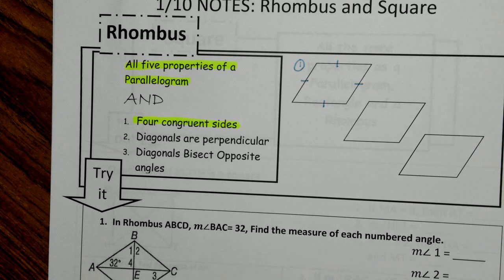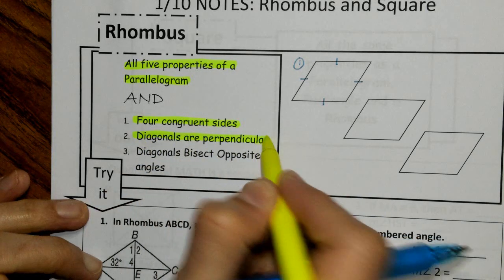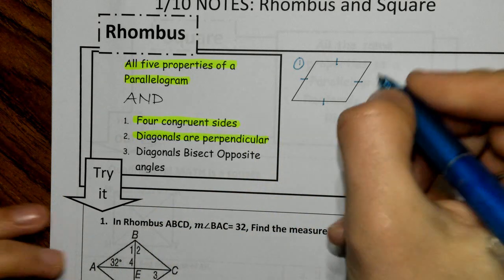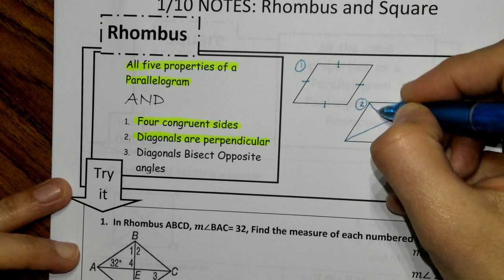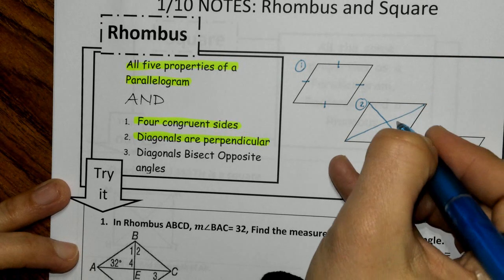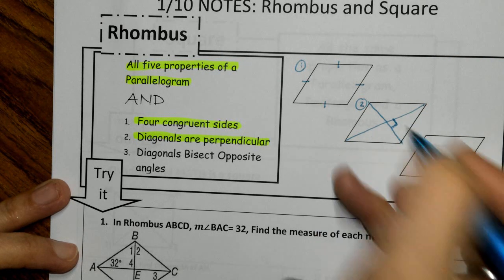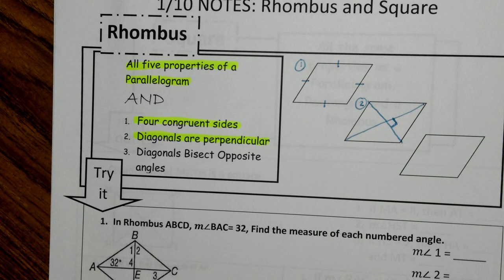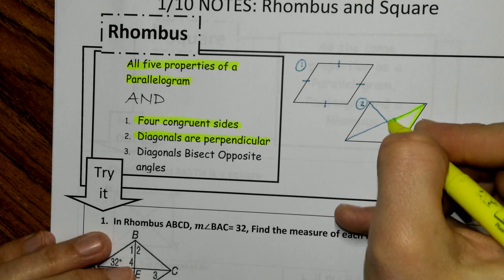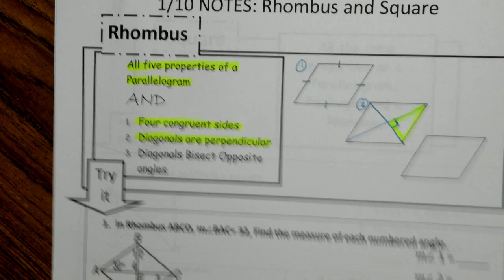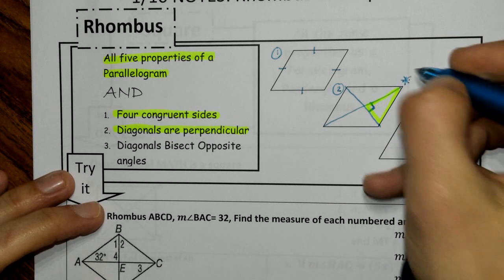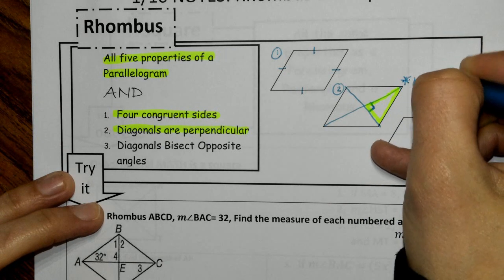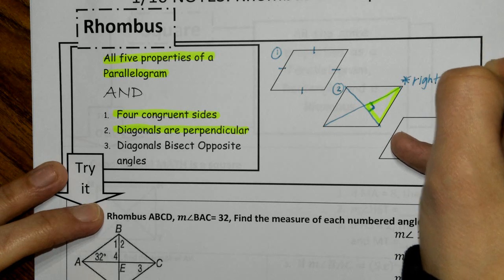The next property is that the diagonals are perpendicular. So on the second rhombus, we draw in our diagonals — this is supposed to be a 90-degree angle. Now, what happens when you have this 90-degree angle — and you will see this with rhombus problems — we have not just a triangle, but a right triangle. So because the diagonals are perpendicular, we form four right triangles.